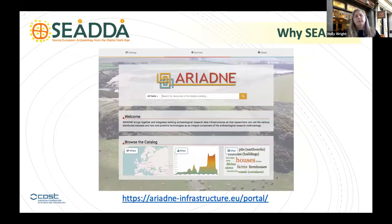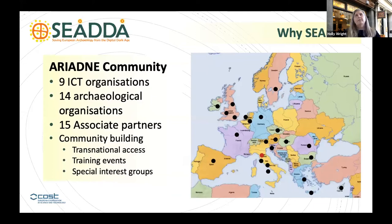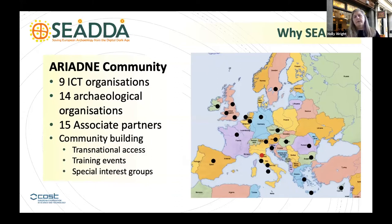This is a quick screenshot of what the portal looks like — a very simple what, where, when interface, which belies the incredible complexity underneath in terms of the technology and the collaborative effort that had to go into it. What was really interesting about Ariadne is that it also very much was a community. There were ITC organizations, archaeological organizations, and by the end of the first phase we had 15 associate partners who wanted to be data providers. There were aspects of community building built into the project, including special interest groups, training events — though they were all outwardly facing.